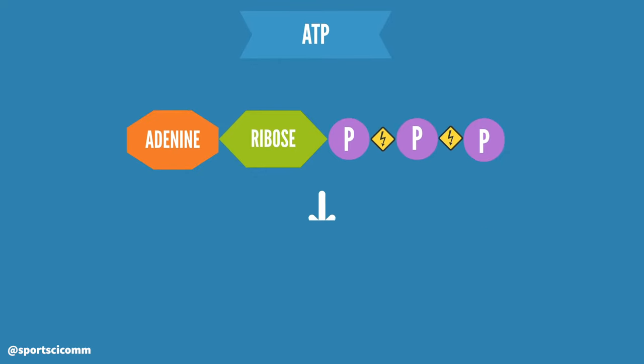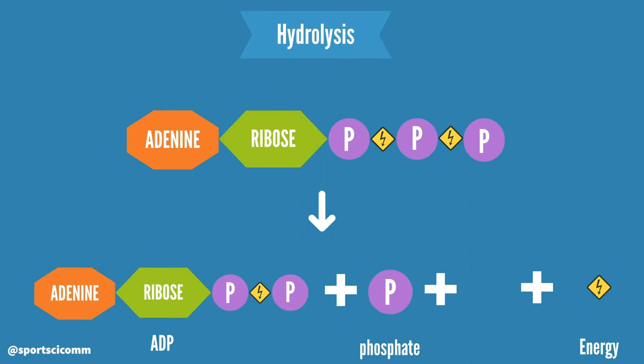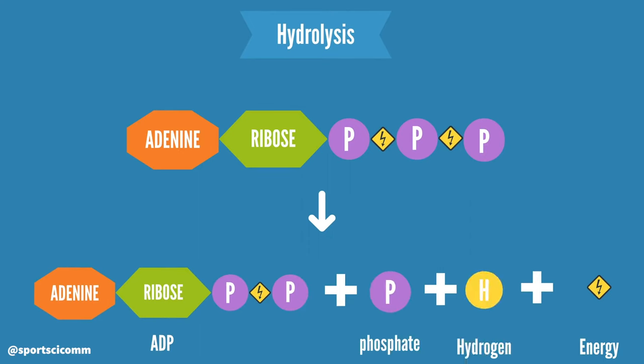The energy is released from ATP through a process called hydrolysis, which involves the splitting of ATP into ADP, an inorganic phosphate, and a hydrogen ion.